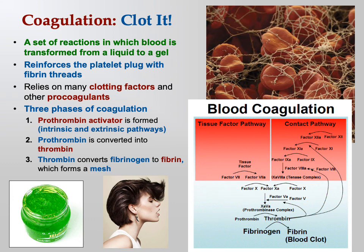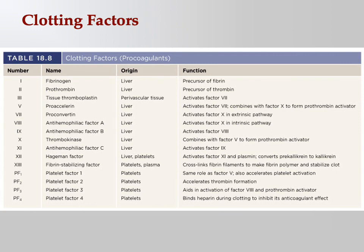Thrombin then takes fibrinogen — a plasma protein always present in your blood — and converts it into fibrin. Fibrin forms the mesh or net of the clot, as you can see in the upper right of the slide. There are 13 clotting factors in total: fibrinogen is clotting factor number one, prothrombin is clotting factor number two, and there are also platelet factors. All of these must work together to form a blood clot.